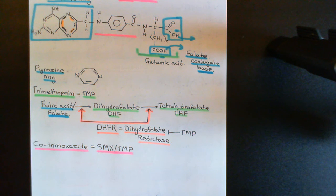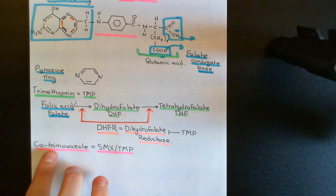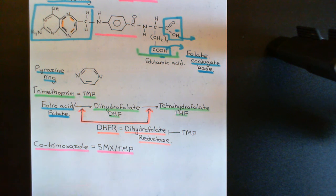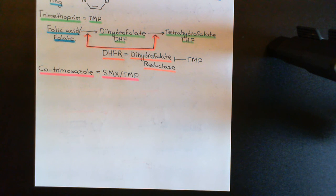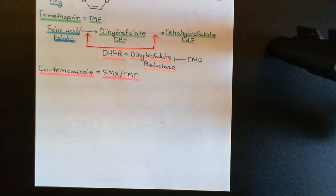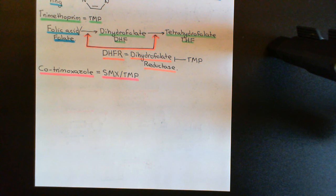Together they will have a stronger bacteriostatic effect than individually. Cotrimoxazole — the 'trim' is for trimethoprim and the 'oxazole' is the ending of sulfamethoxazole. I hope you have learnt how the folate antagonist antibiotics achieve a bacteriostatic effect and understand that these antibiotics will be useful in people whose immune system is up to the job of getting rid of the bacterial infection once you've stopped it getting any worse. But if you are dealing with someone who is immunosuppressed and whose immune system is not up to clearing the bacterial infection, then you will need a bactericidal antibiotic, which these two classes are not.